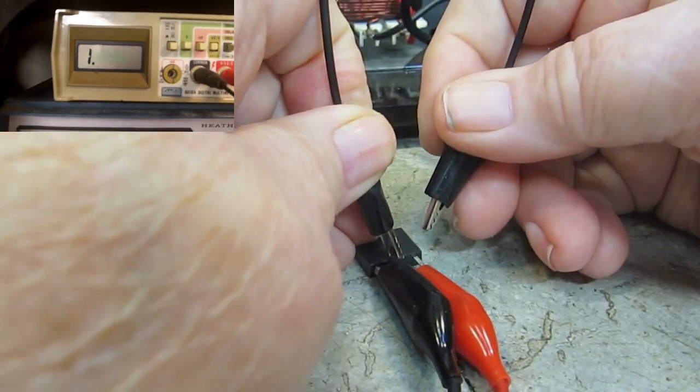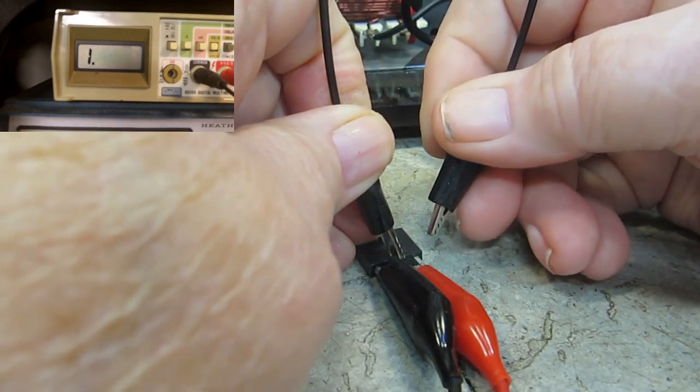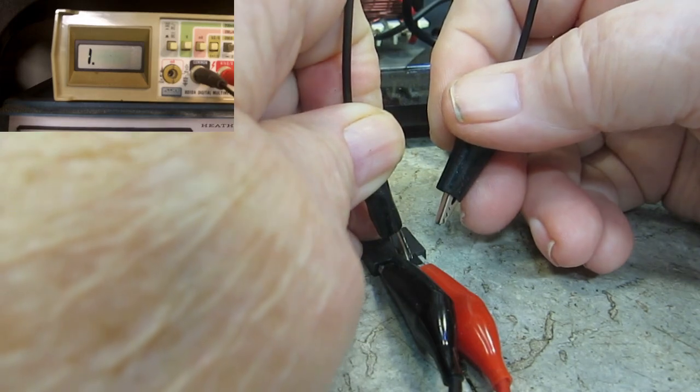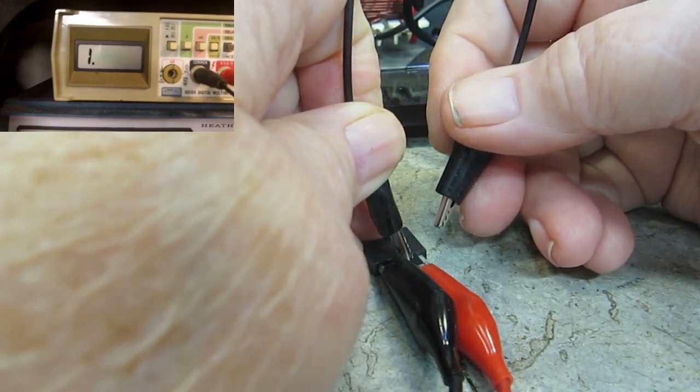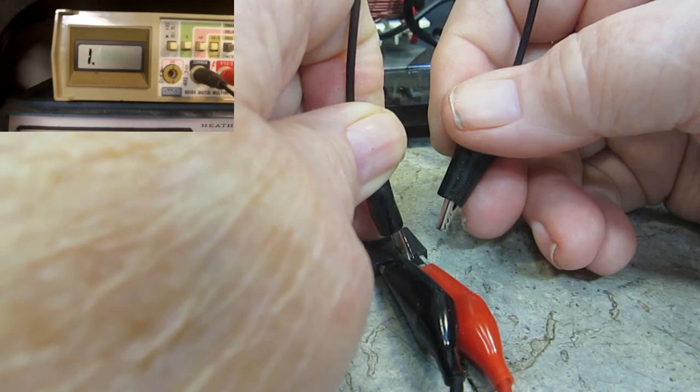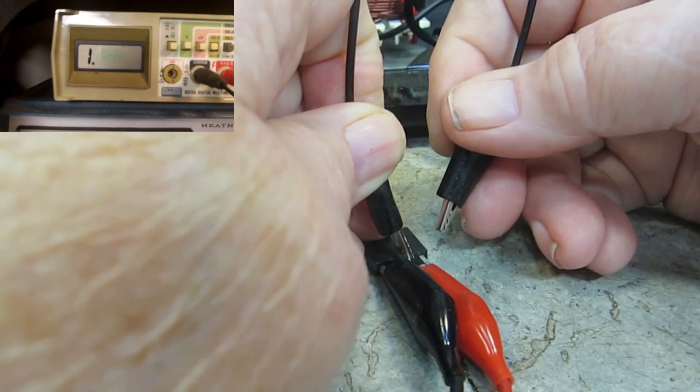And you watch the Fluke Meter as we do it. Now, the Fluke is set... I think I just did it accidentally. The Fluke Meter is set to a 2K setting. That is the diode setting for the Fluke.